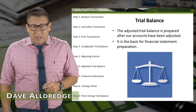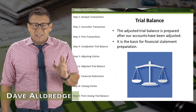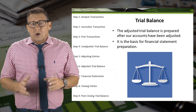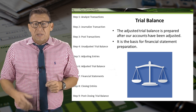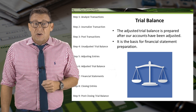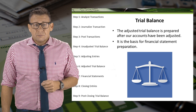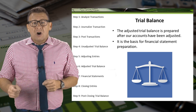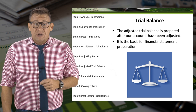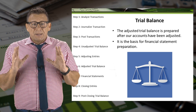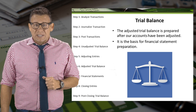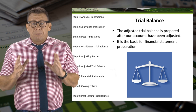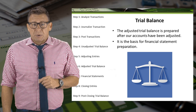Preparing the adjusted trial balance is the sixth step in the accounting cycle. We learned earlier that a trial balance is a list of company accounts and their ending ledger balances. The adjusted trial balance is prepared after our accounts have been adjusted. It represents the best information a company has to prepare financial statements — it is the basis for financial statement preparation.